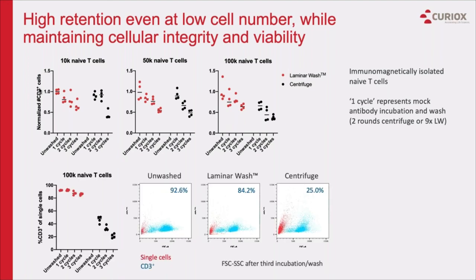Examination of the scatter plots also revealed a significant decrease in the frequency of CD3-positive cells with each round of centrifuge wash. Compared to the initial frequency of more than 90% CD3-positive cells, centrifuged naive T cells had only a quarter of single-cell events being CD3-positive by the end of the third incubation and wash. The overlaid scatter plots showed a significant increase in forward-side scatter low events, which are likely debris from centrifugal stress. This result implies that mechanical stresses from centrifugation cause significant cell death and losses.